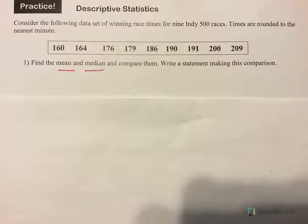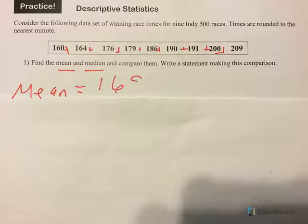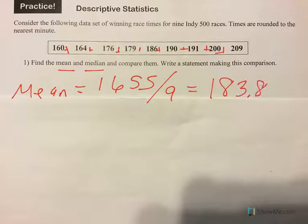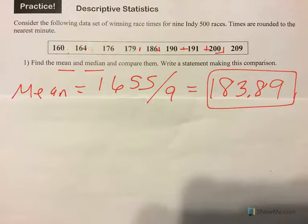Let's practice some descriptive statistics. First things first, we are simply going to find the mean and the median and then make a comparison statement. Remember, the mean is found by adding all of these numbers up and dividing by how many we have. When we add those 9 numbers together, we get 1,655, divide by 9, and the average is roughly 183.89. You might have rounded that a little bit differently, but that's basically the mean.